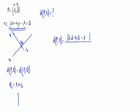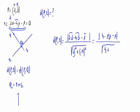Divided by the square root of the coefficient of X squared plus the coefficient of Y squared. This is, in absolute value, 4 minus 12 minus 1, divided by the square root of 4 plus 16.